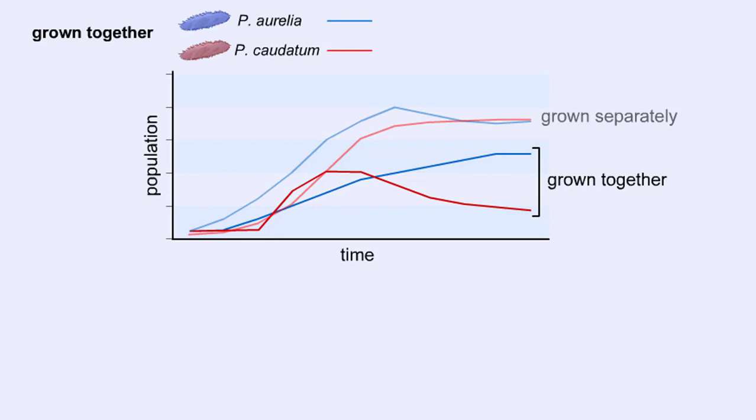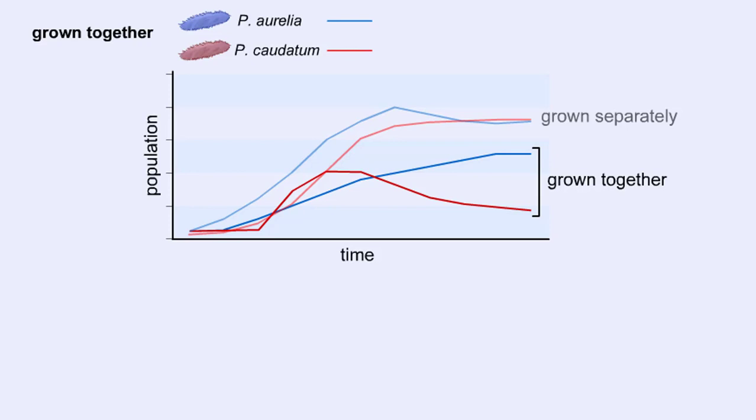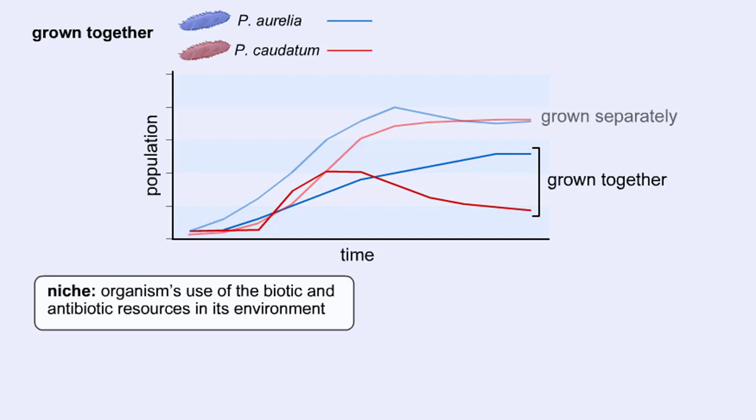Since these two species compete for the same resources, they are said to occupy the same ecological niche. This experiment, conducted by G. F. Gauss, illustrates the competitive exclusion principle, which states that two species in direct competition cannot occupy the same niche.